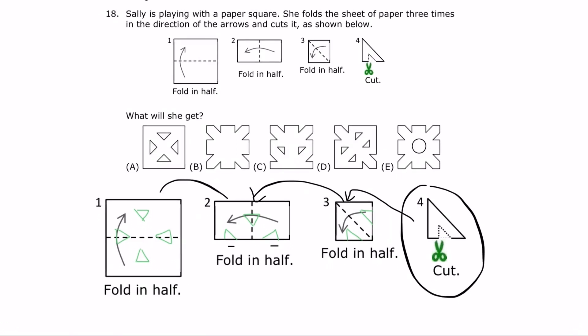If she unfolds this, she will get this, where there are four triangles cut out on the inside of the square. And this picture matches answer choice A.